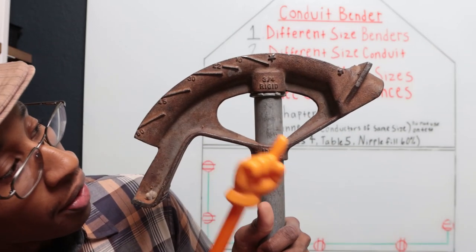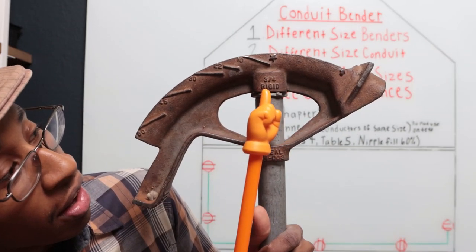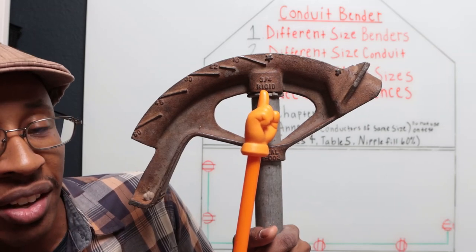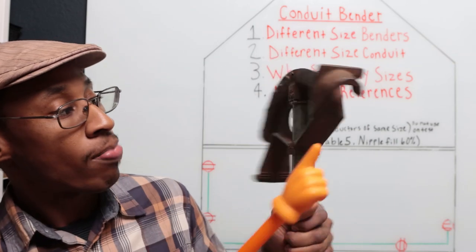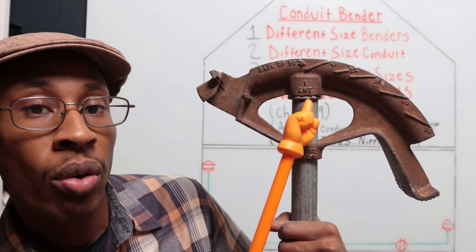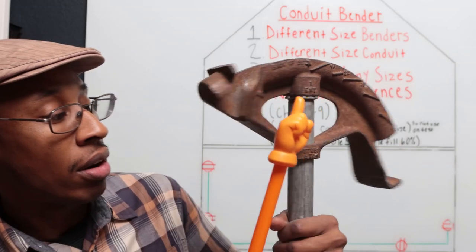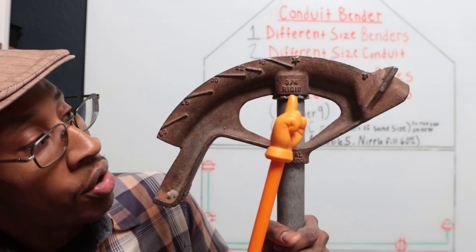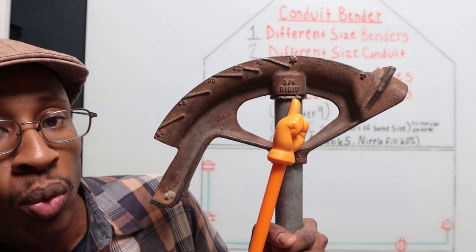So now on the back side of it, three quarter rigid. So you can bend one inch EMT conduit with this bender. Also, you can bend three quarter rigid with this same bender.